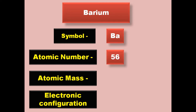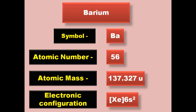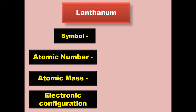Barium has symbol Ba, atomic number 56, atomic mass 137.327, electronic configuration [Xe] 6s2. Barium is an alkaline earth metal and exists in solid form at room temperature.